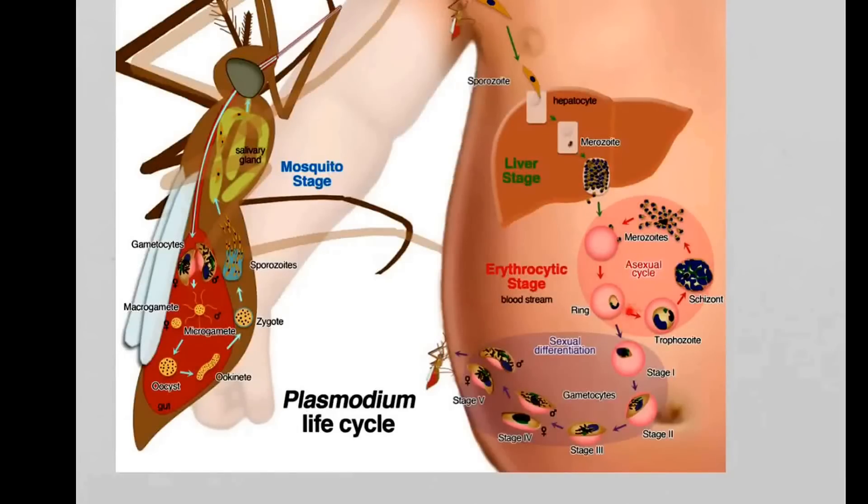So in this erythrocytic or red blood cell cycle, we generate more and more of these malaria parasites. Then some of these parasites will undergo another process, and they will differentiate into male and female parasites.